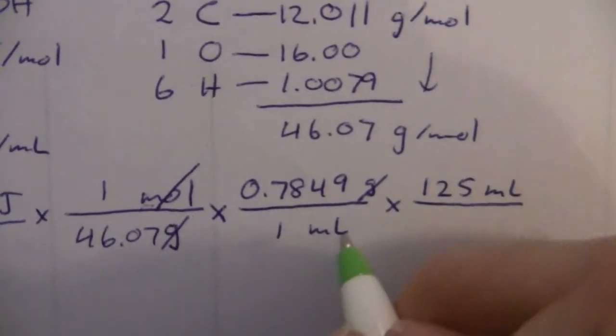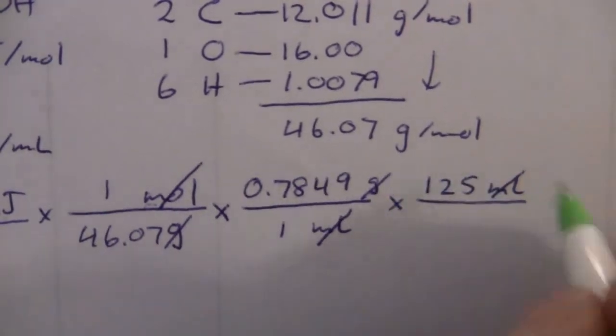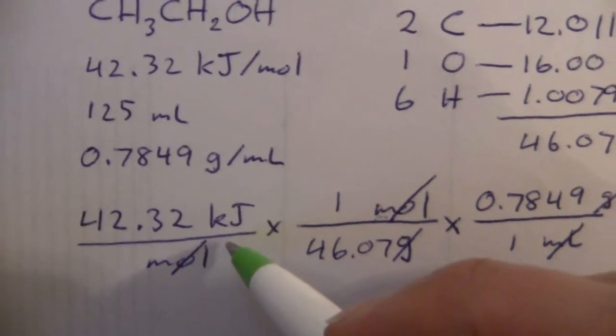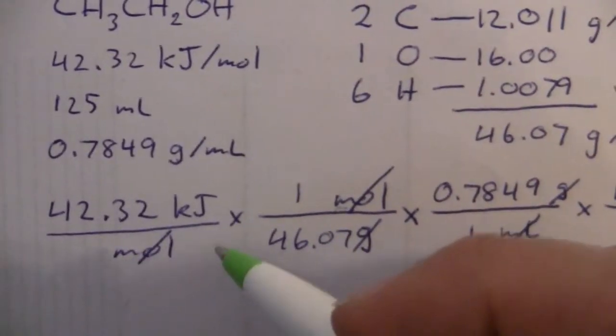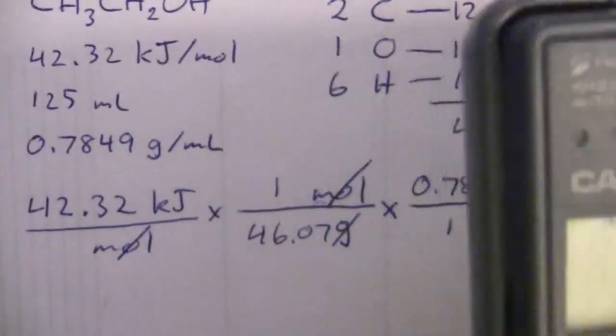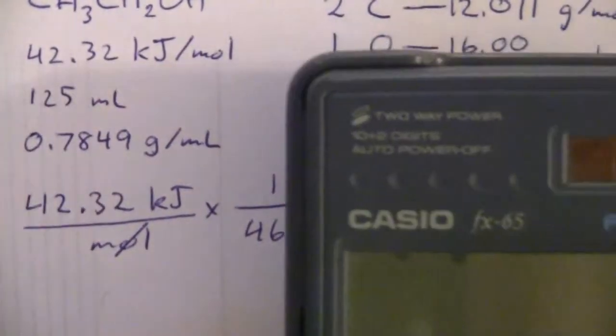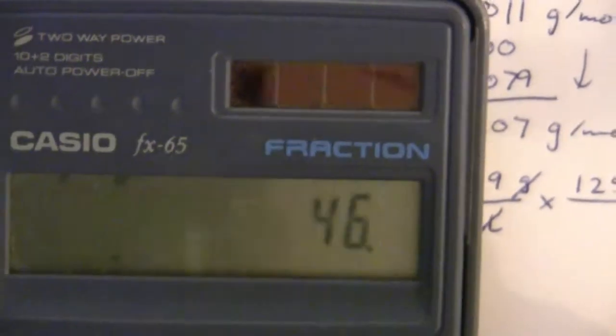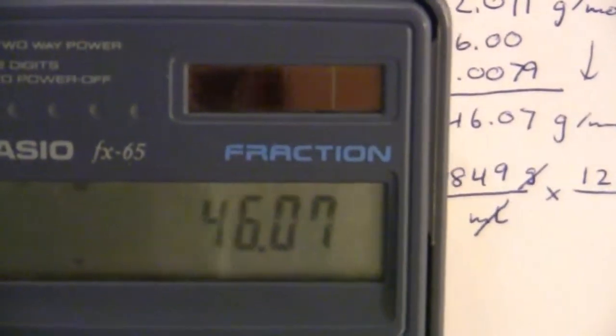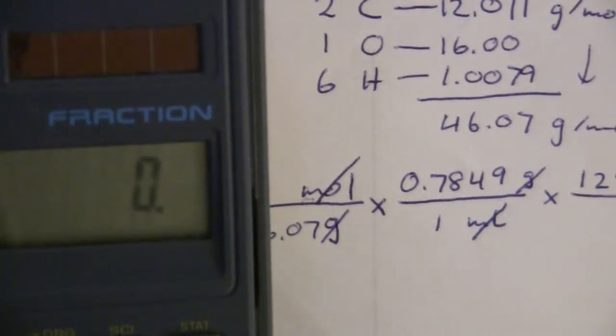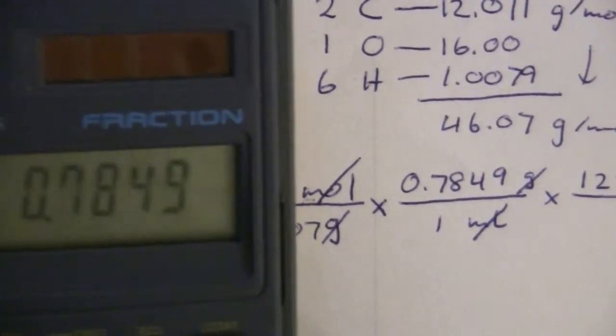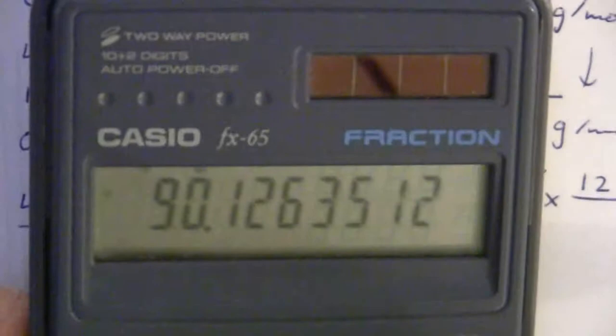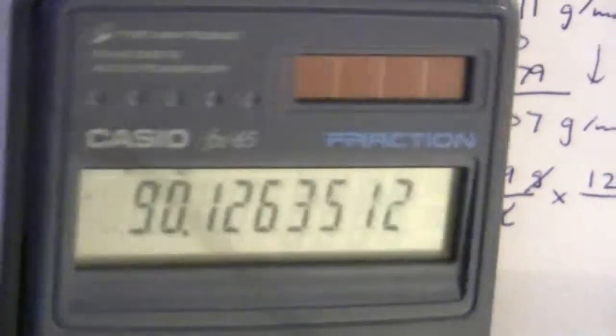That cancels out those units, and we can put a one there if you like. And we'll end up with kilojoules. Let's go ahead and calculate this out. 42.32 divided by 46.07 times 0.7849 times 125, and we get 90.126.